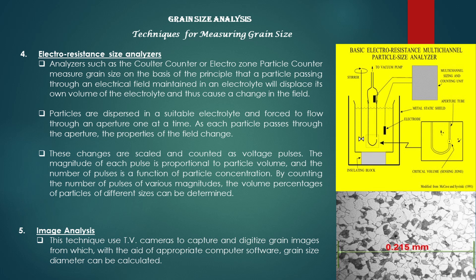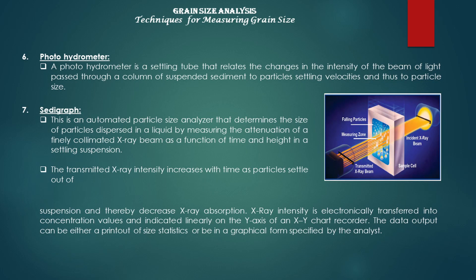By counting the number of pulses of various magnitudes, the volume percentages of particles of different sizes can be determined. The next technique is image analysis, which uses TV cameras to capture and digitize grain images from which, with the aid of appropriate computer software, grain size diameter can be calculated. The photohydrometer is a settling tube that relates the changes in the intensity of a beam of light passed through a column of suspended sediment to particle settling velocities and thus to particle size.